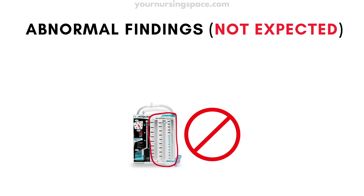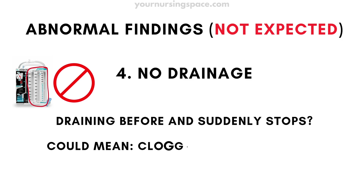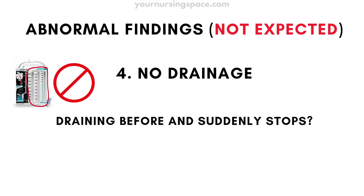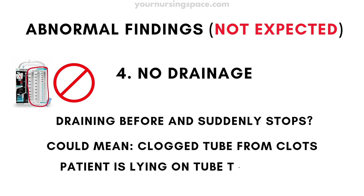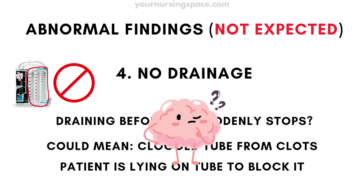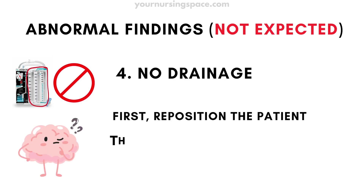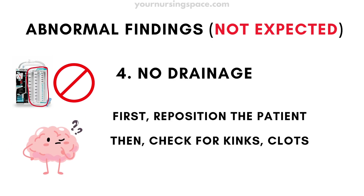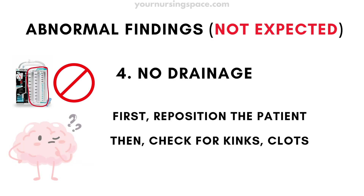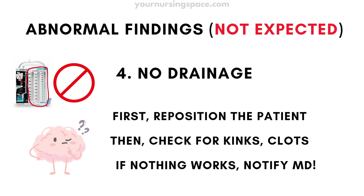No drainage at all: if the chest tube was draining before but suddenly stops, it could mean the tube is clogged with a clot, or the patient is lying on the tubing and blocking it. First, reposition the patient. Check for kinks or clots in the tubing. If nothing works, call the provider to assess the tube.